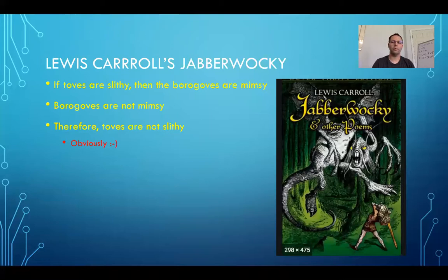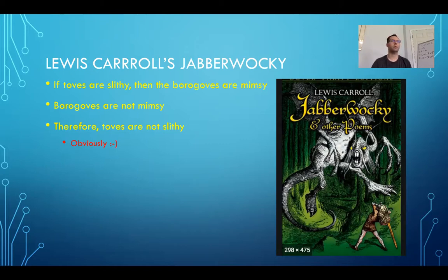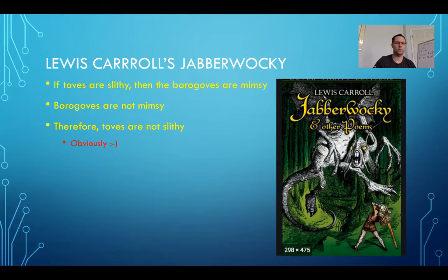So what do we do? We try to put things together in such a way that forces sense upon whatever is said. Lewis Carroll's Jabberwocky and Other Poems makes use of logic, but throws in all sorts of silly nonsensical characters and ideas. And yet they're put together in such a way that you make conclusions that seem to be silly, but are valid. If Toes are slithy, then the Borogovs are mimsy. Borogovs are not mimsy. Therefore, Toes are not slithy. He just used modus tollens. And of course, everyone knows that Toes are not slithy. Truly dizzying.